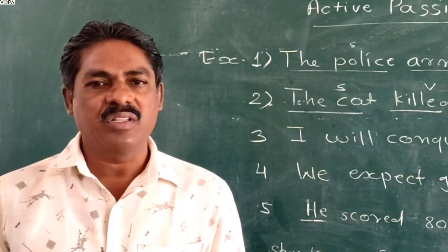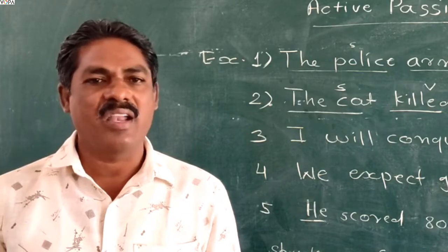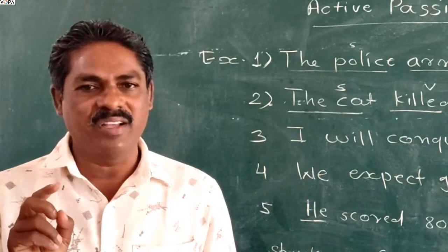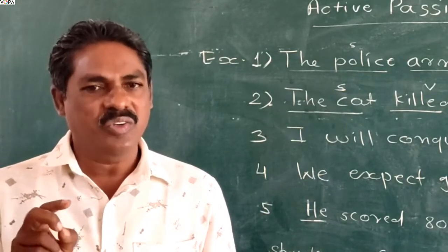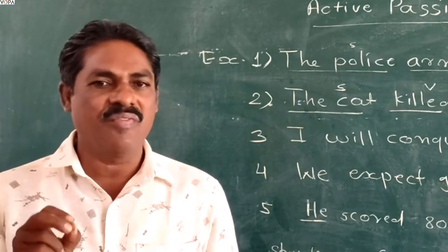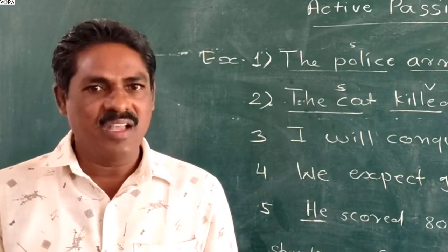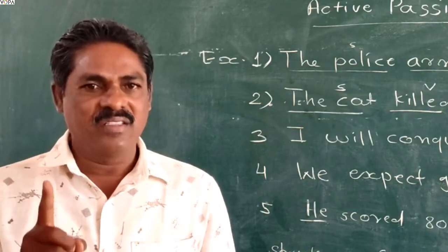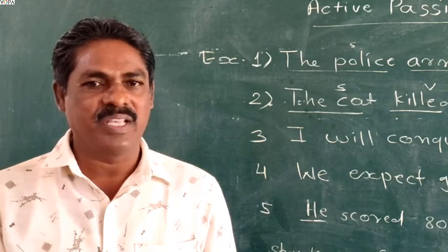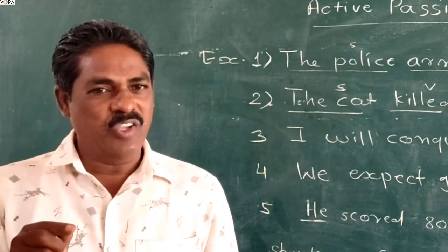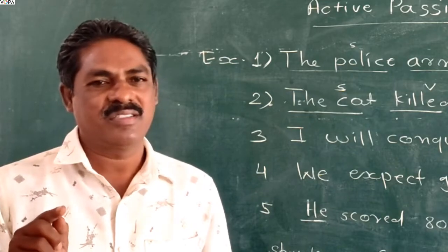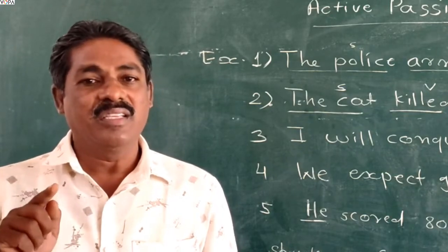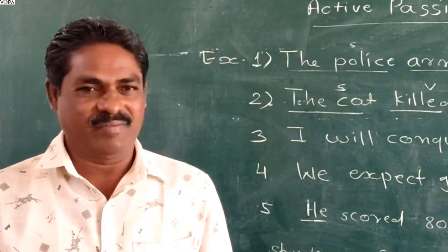Now we are going to learn about the voice in English. There are two types of voices: the first one is active voice and the second one is passive voice. Today we will see only the definition of active voice. Active voice means the form of a word shows that the person or thing denoted by the subject does something. The active voice is so called because the person denoted by the subject acts.